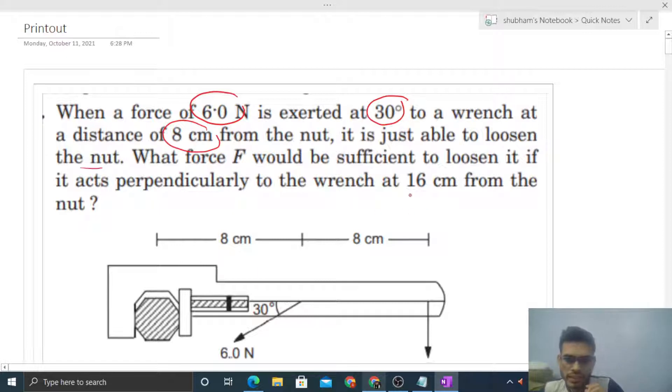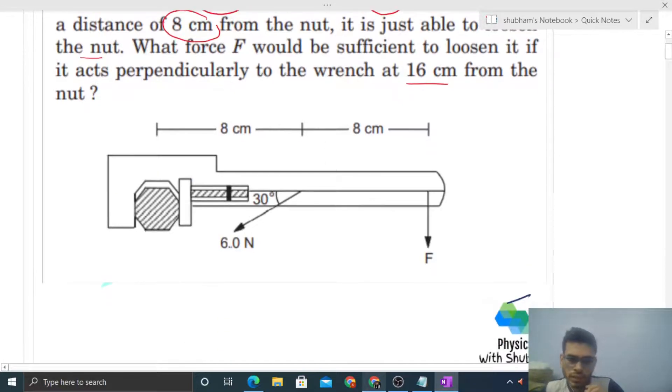When you're applying a force of 6 N at a distance of 8 cm at an angle of 30°, this force is just sufficient to loosen the nut. This means we need to find the torque about this nut. You can take the component of this 6 N force.